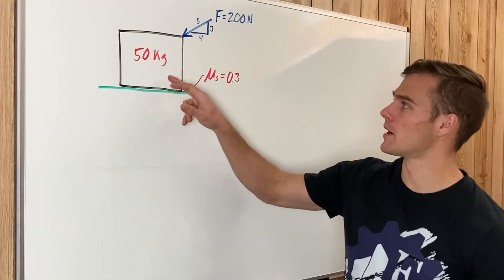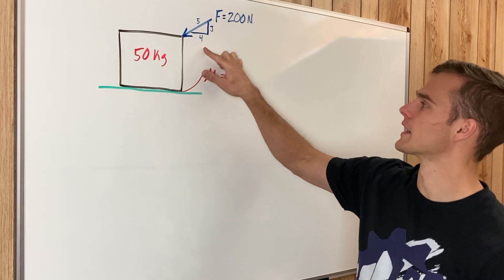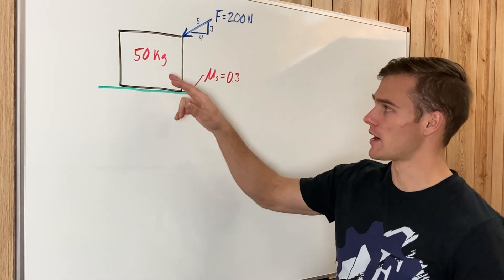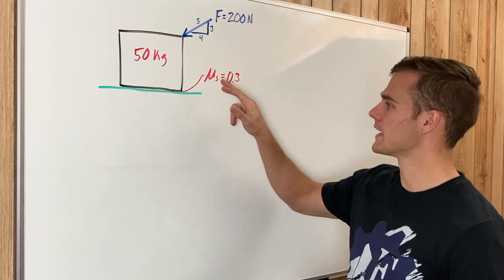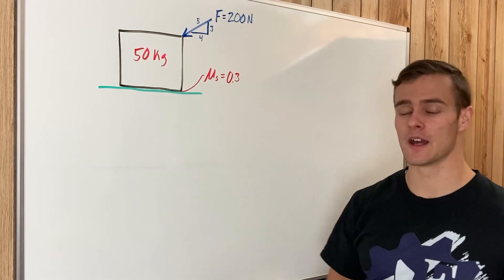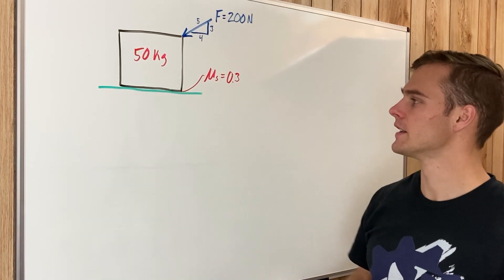What we have here is a box with a force pushing on it of 200 newtons in the direction of this 3-4-5 triangle, and the box has a mass of 50 kilograms. The coefficient of static friction between the ground and the box is 0.3, and we're going to find the friction force between the box and the ground. This is a pretty simple example problem.